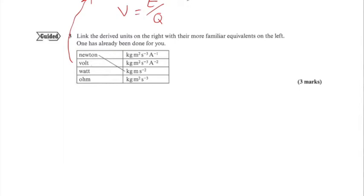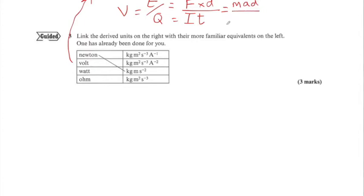Energy E is given by force times distance. Charge Q equals IT — current multiplied by time. So E over Q equals force times distance divided by IT. Force is mass times acceleration, MA, then multiplied by distance D. The unit of current is amps and the unit of time is seconds.